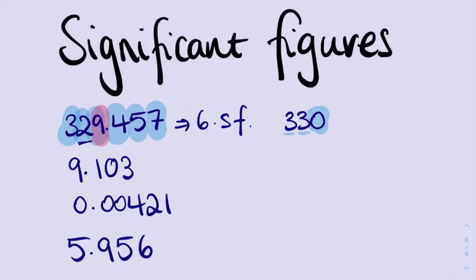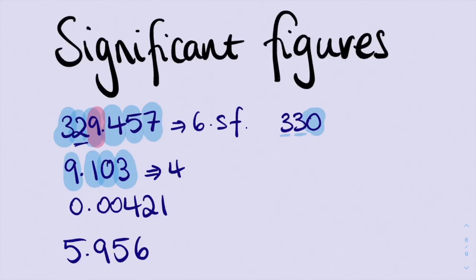So in our second question, we have 1, 2, 3, 4 significant figures. We're going to change that into 2 significant figures. We're going to look at this 0 — that's the third number from the left — and that tells us our final answer is going to be 9.1, because 0 is less than 4 and therefore doesn't have an impact on the 1.